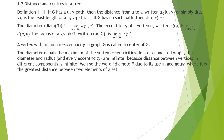Next is the definition of distance and centers in a tree. Distance is the length of the shortest path between any two vertices. Eccentricity is the maximum distance between two vertices U and V. Radius is the minimum eccentricity. Diameter is the length of the longest path in a tree T. A vertex with minimum eccentricity in a graph G is called a center of G. The diameter equals the maximum of the vertex eccentricities. In a disconnected graph, diameter and radius are infinite because the distance between vertices in different components is infinite.